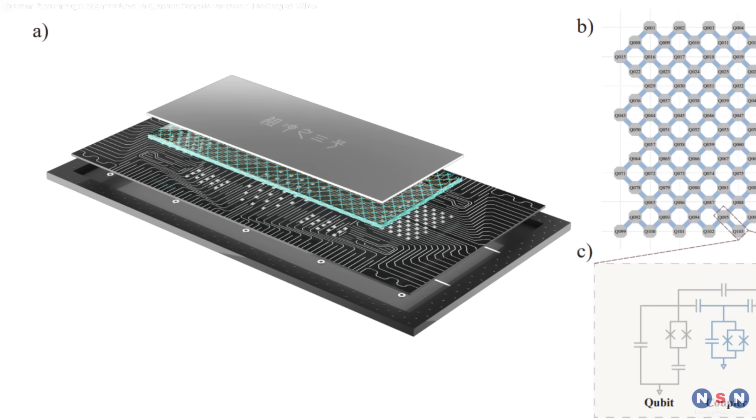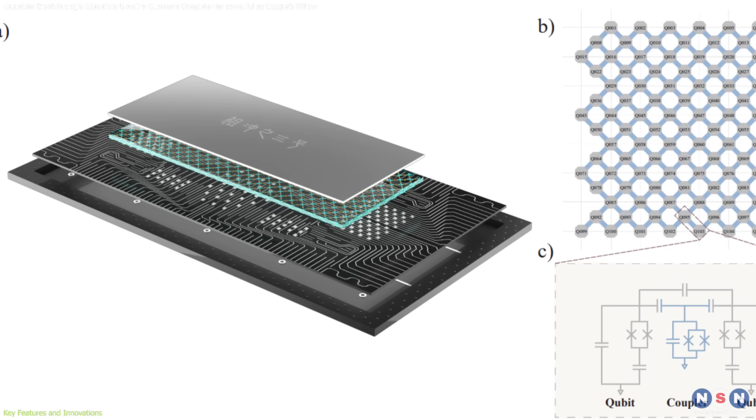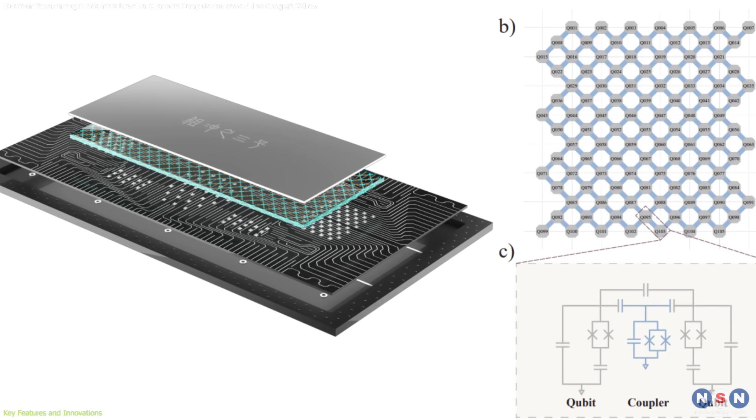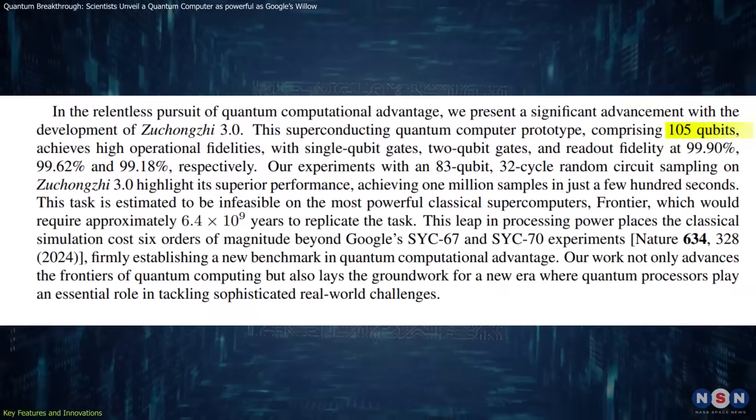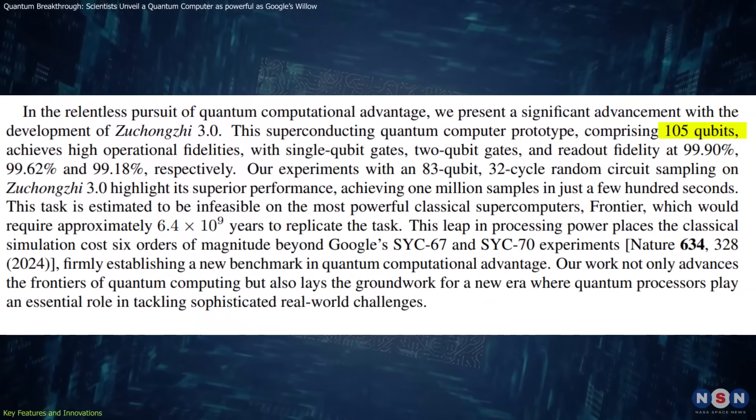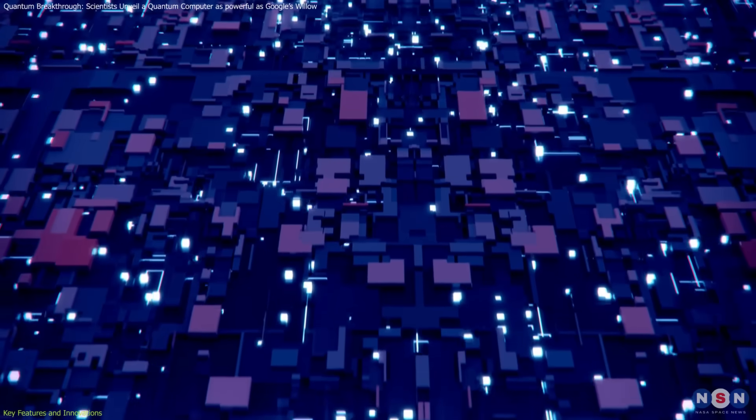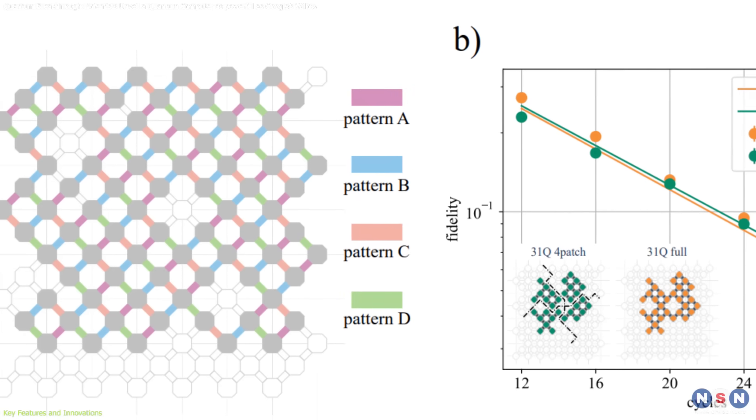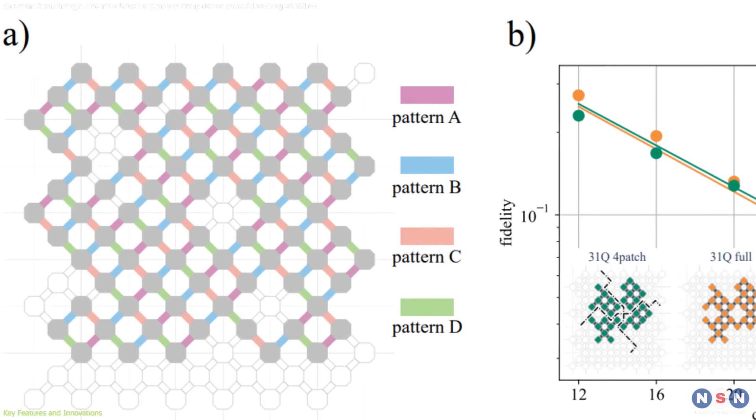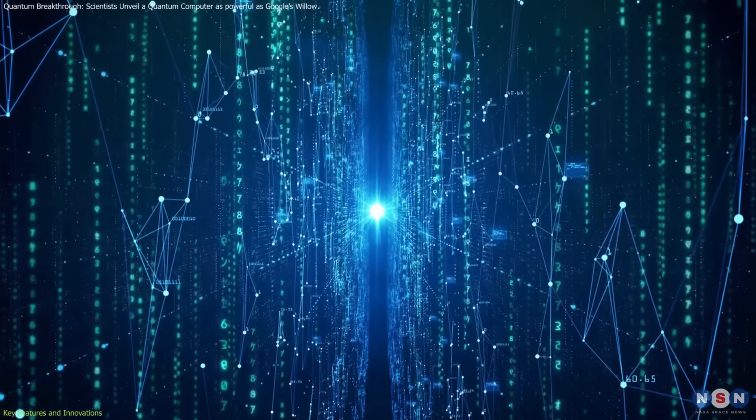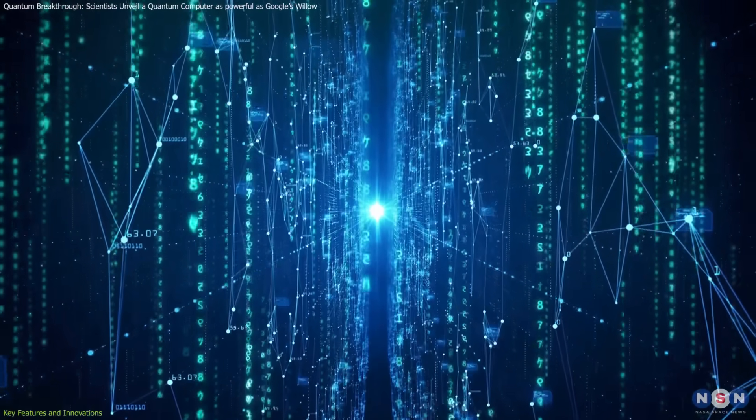The Zhu Changzhi 3.0 Processor is designed to tackle some of the biggest challenges in quantum computing. At its core, it uses 105 qubits, which are tiny building blocks of quantum information arranged in a rectangular grid. This arrangement helps the qubits interact more efficiently, enabling the computer to perform complex calculations.